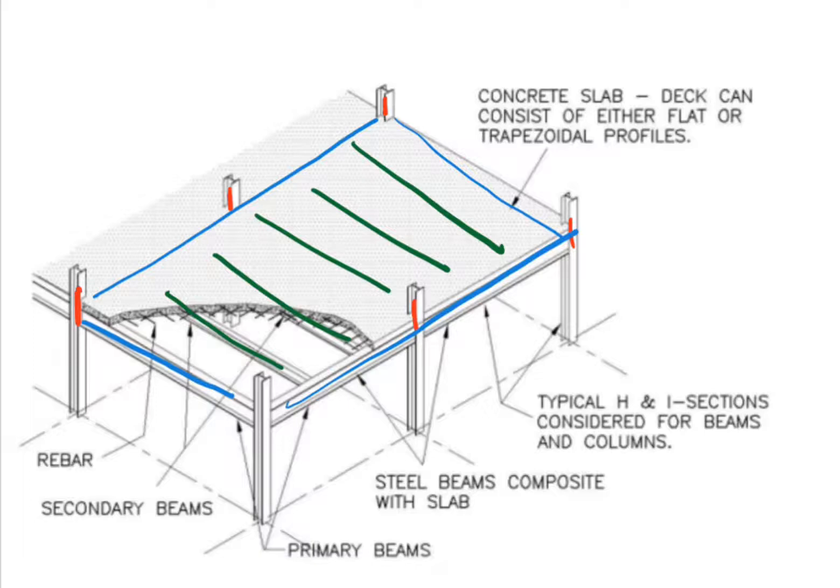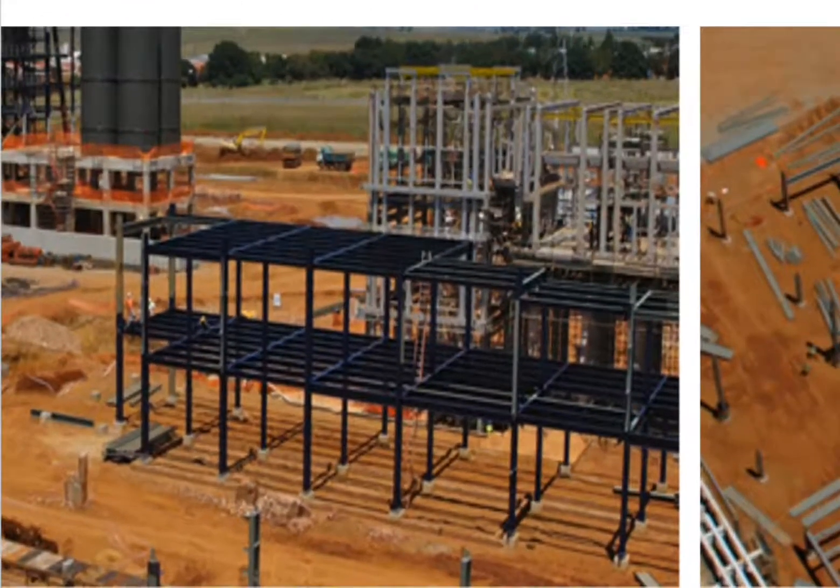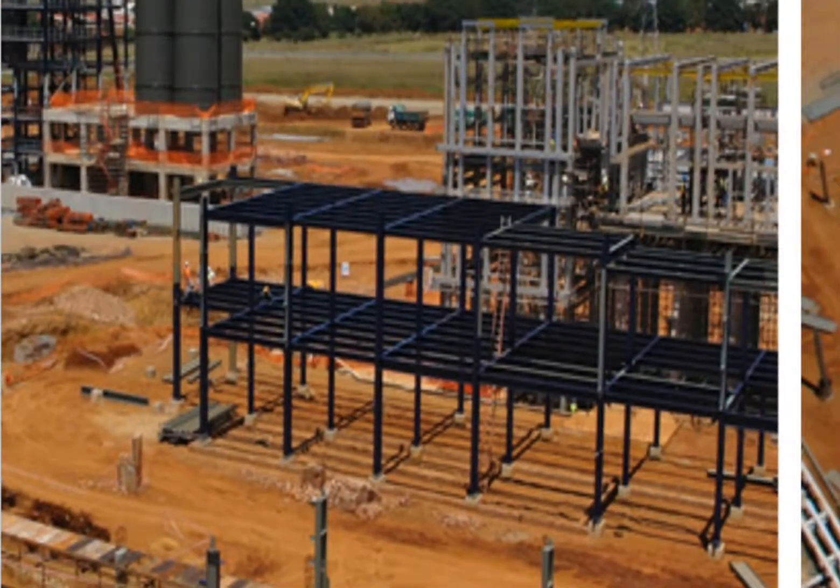Here we have an example of a composite structure being built - an industrial facility. It's a really nice building system also used for high rises. You see the beams and columns which have gone up, and those first get erected.